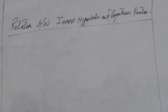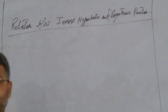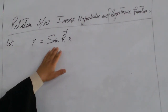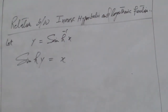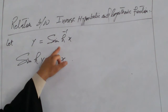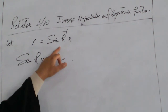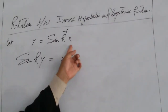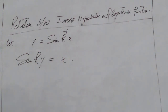Today our topic is the relation between the inverse hyperbolic function and the logarithmic function. Let y equal to sine hyperbolic inverse of x. To convert the inverse hyperbolic function to a hyperbolic function, sine hyperbolic of y is equal to x, where x is the independent variable and y is the dependent variable.